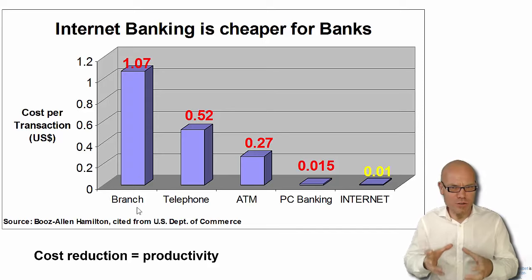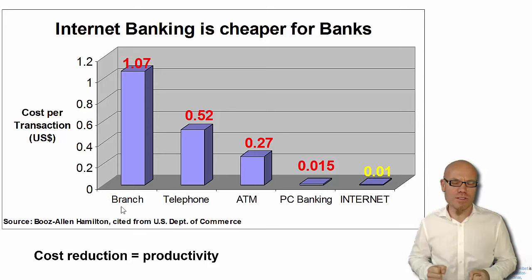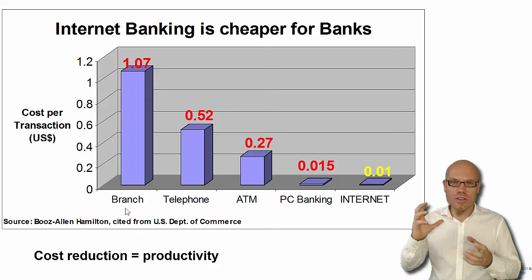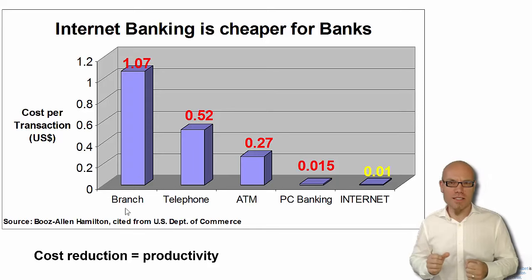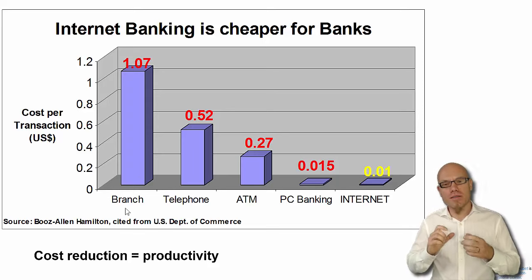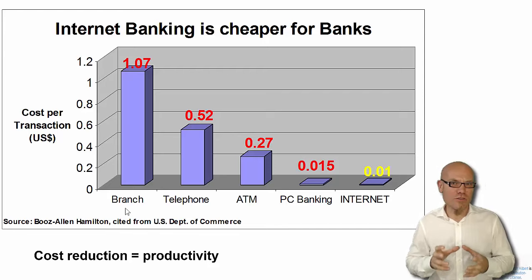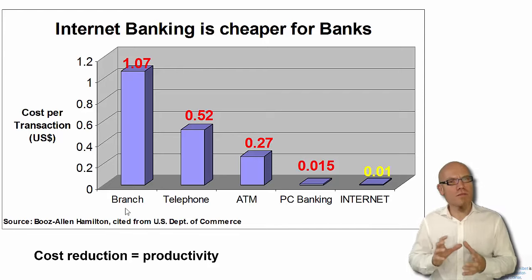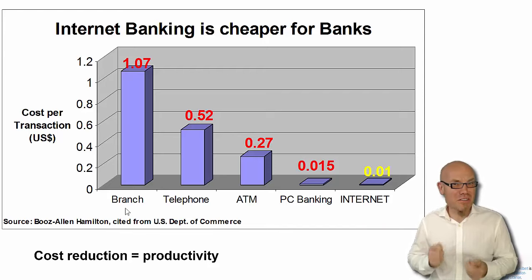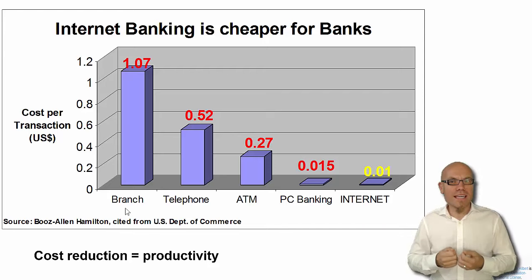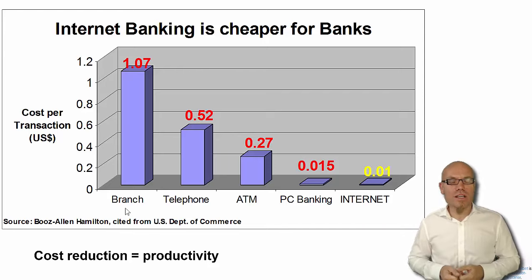They have to rent a space where to sit this person. They need a security mechanism. They need to pay this person's salary and so forth. They need to train this person. So on average, it costs the bank about a dollar for every transaction you make in the branch.